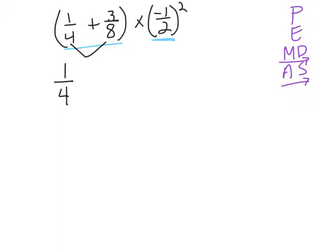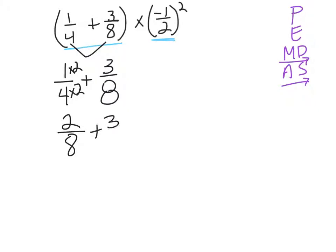When we add fractions, we need common denominators. This is handy because 8 is a multiple of 4. So in order to have a common denominator, I'm going to multiply 4 by 2 to get 8, and 1 by 2 to get 2. So 1 times 2 is 2, 4 times 2 is 8, and now I can add these. So my first parentheses is going to be 5 eighths.